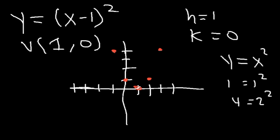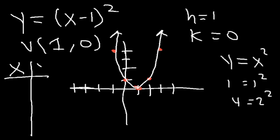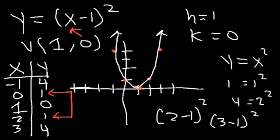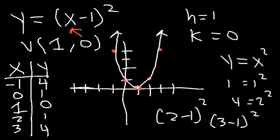If you prefer to use a table, center it around the vertex and choose two points to the right and two to the left. Plugging in x equals 2: (2 minus 1)² equals 1, giving the point (2, 1). Plugging in x equals 0 gives the same value by symmetry. Plugging in x equals 3: (3 minus 1)² equals 4. The point negative 1 also gives y equals 4, because negative 1 and 3 are equally distant from the vertex and share the same y-value due to symmetry.